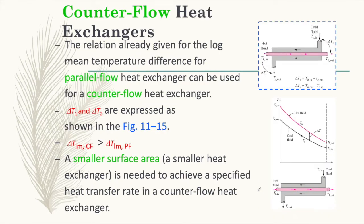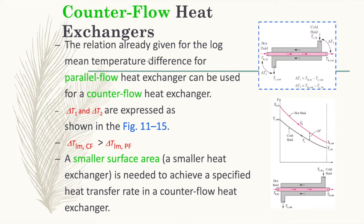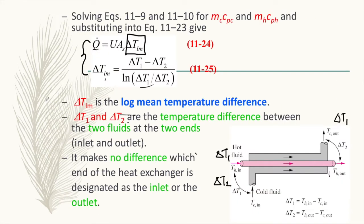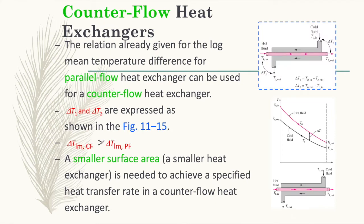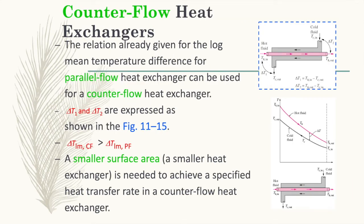For a counter flow heat exchanger, the same delta_T_lm equation applies, but note that delta_T_lm for counter flow is much greater than delta_T_lm for parallel flow. This means that a smaller surface area — a smaller heat exchanger — is needed to achieve a specified heat transfer rate in a counter flow configuration compared to parallel flow.